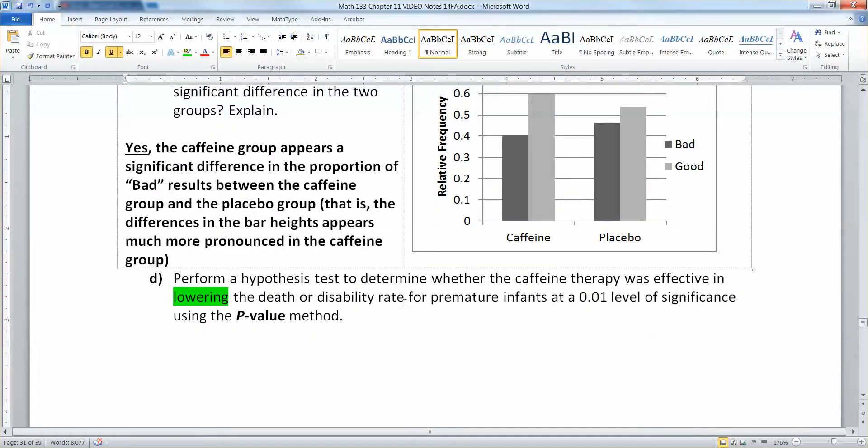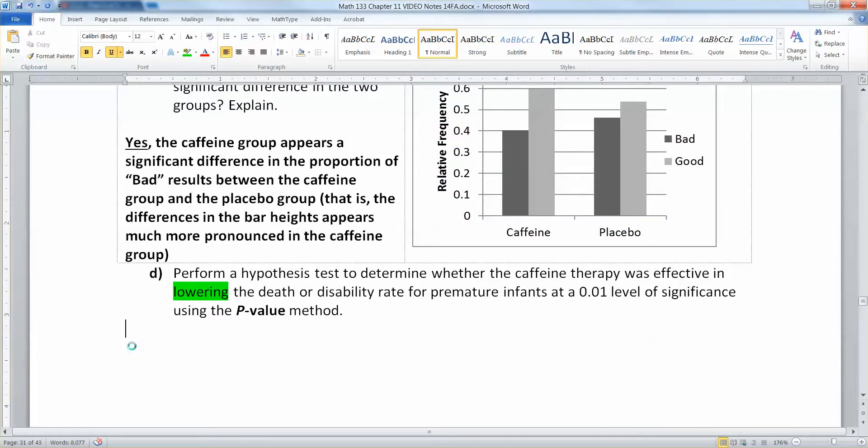So now we think there's going to be a difference, but now we have to prove it using a hypothesis test to determine whether that caffeine therapy is effective at the 0.01 level of significance using the p-value method. All right, we have to start with our hypotheses.